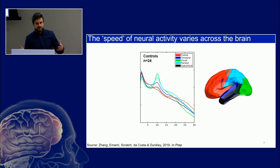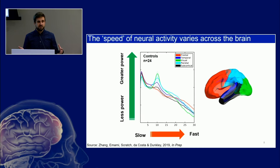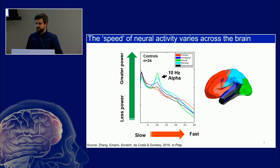One of the great things about MEG is that we get this rapid measurement of brain activity down to about a thousandth of a second — many times a second we're recording brain activity. We can look at very slow brain activity all the way through to very fast brain activity. Different areas of the brain operate at different speeds, and we see characteristic profiles with particular frequencies dominating, including this peak at around 10 hertz where neurons are synchronizing.